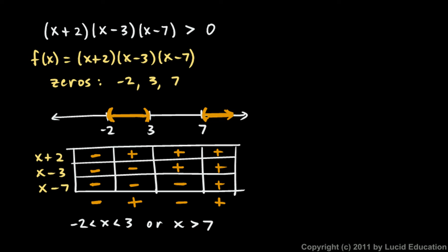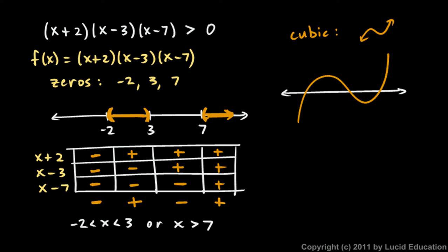That approach works every time but is fairly tedious. Here's another way to think about it. This original expression is a cubic. Remember the shape of a cubic function. In this case there are three real zeros, so we can draw an x-axis and imagine a cubic crossing it at three points: negative 2, 3, and 7.